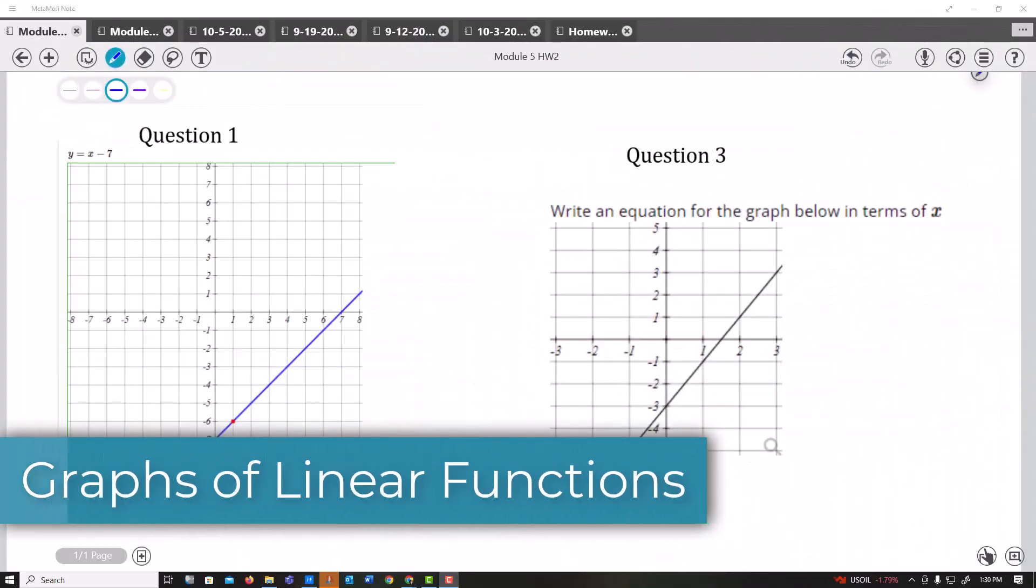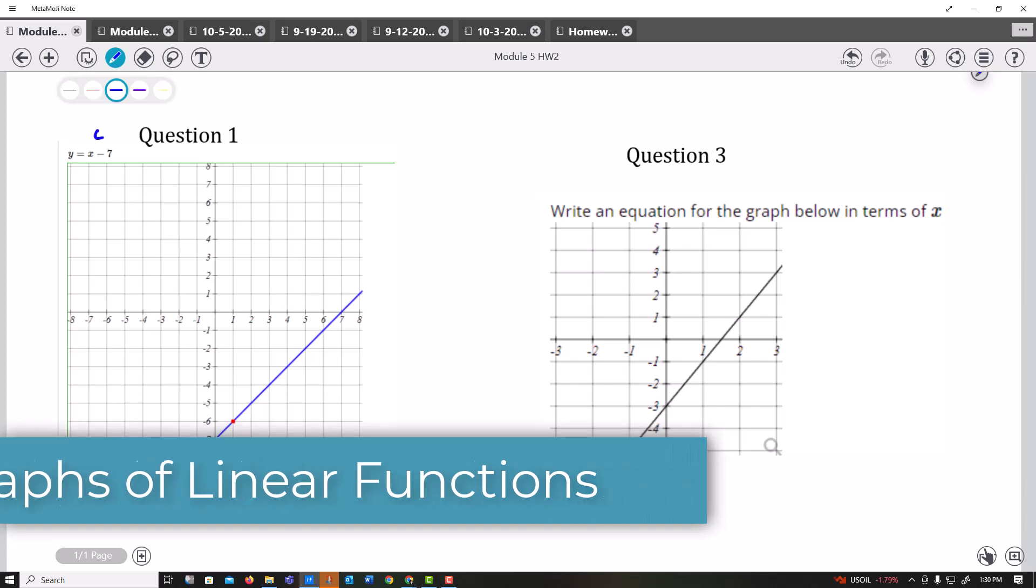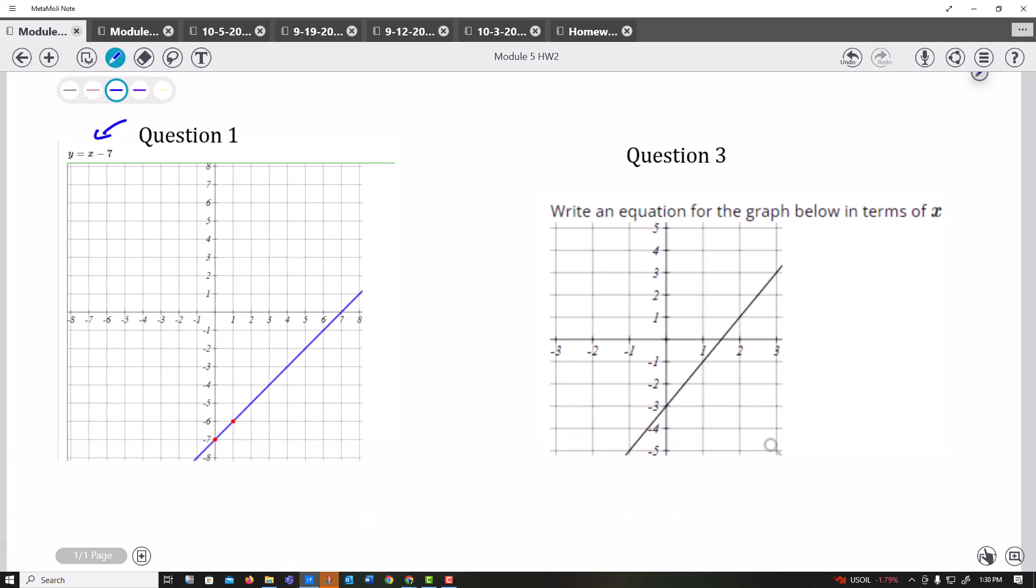Okay, let's look at some linear function graphs. This question gave me this equation and how did I graph this with the points and the slope. Notice that this is my y-intercept, so I knew that that point would be there.